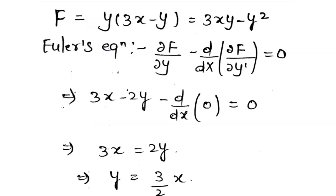In this question, the functional is given as F equals y times (3x - y). So if we multiply it out, we get 3xy minus y squared. We can write it as Euler's equation: del f by del y minus d/dx of del f by del y dash.